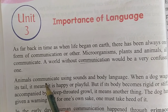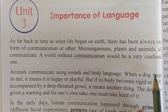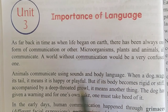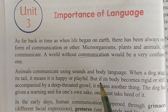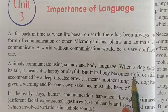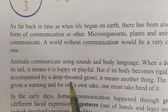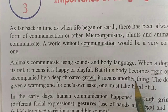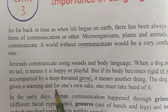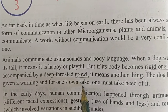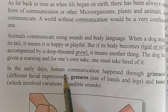Animals communicate using sounds and body language. When a dog wags its tail, it means it is happy or playful. But if its body becomes rigid or stiff, accompanied by a deep-throated growl, it means another thing. The dog has given you a warning and one must take heed of it.